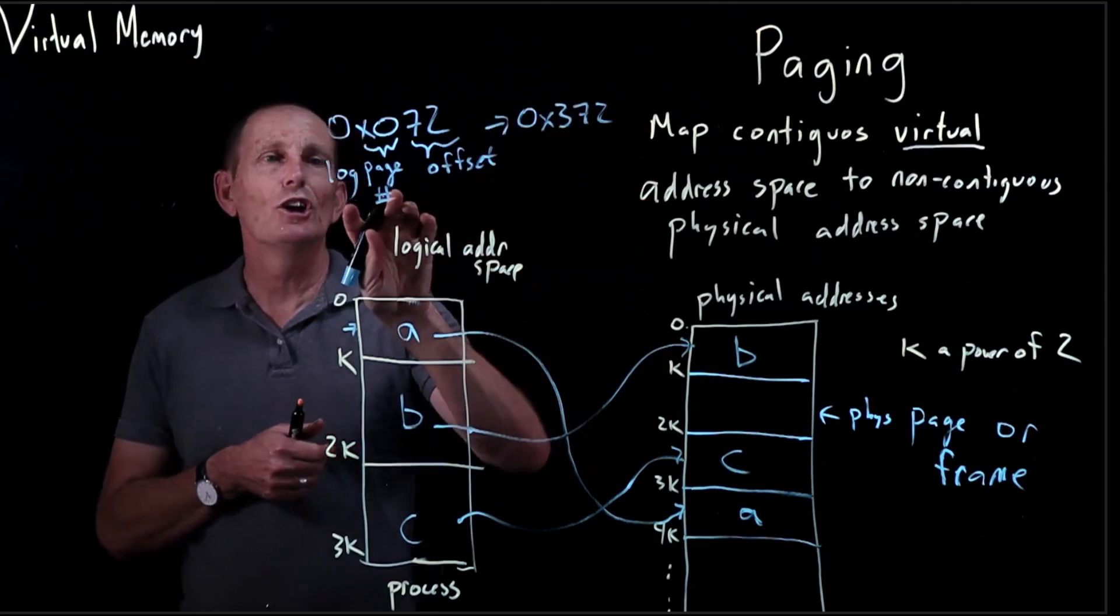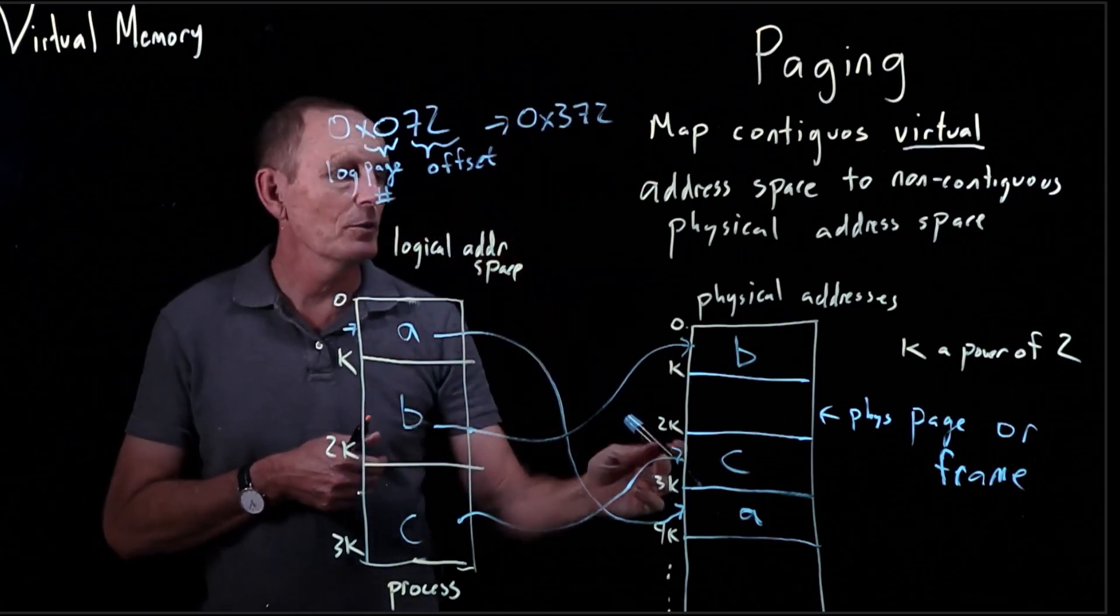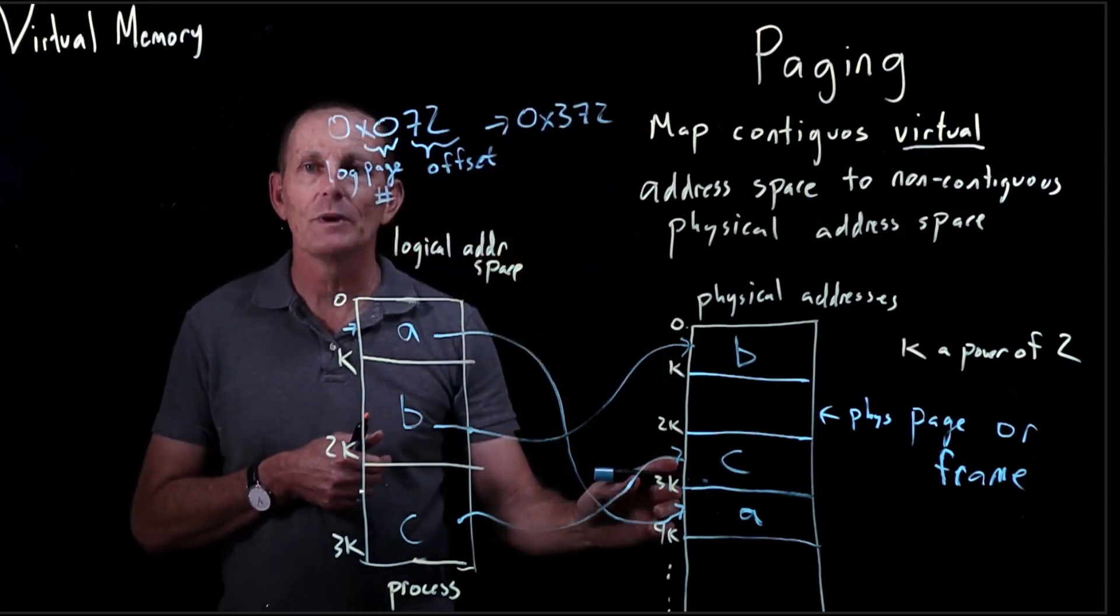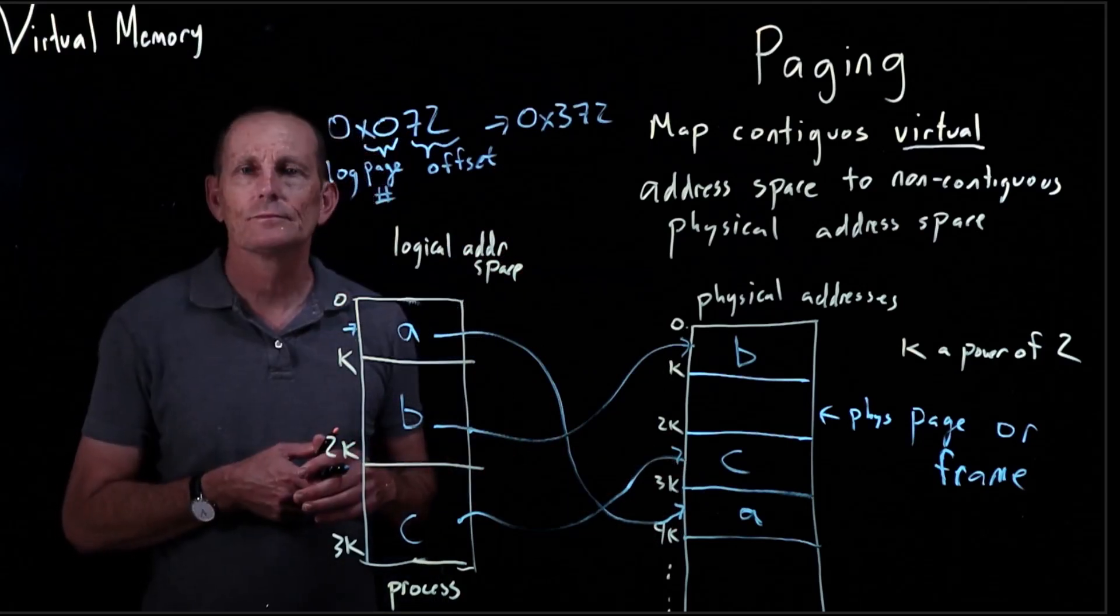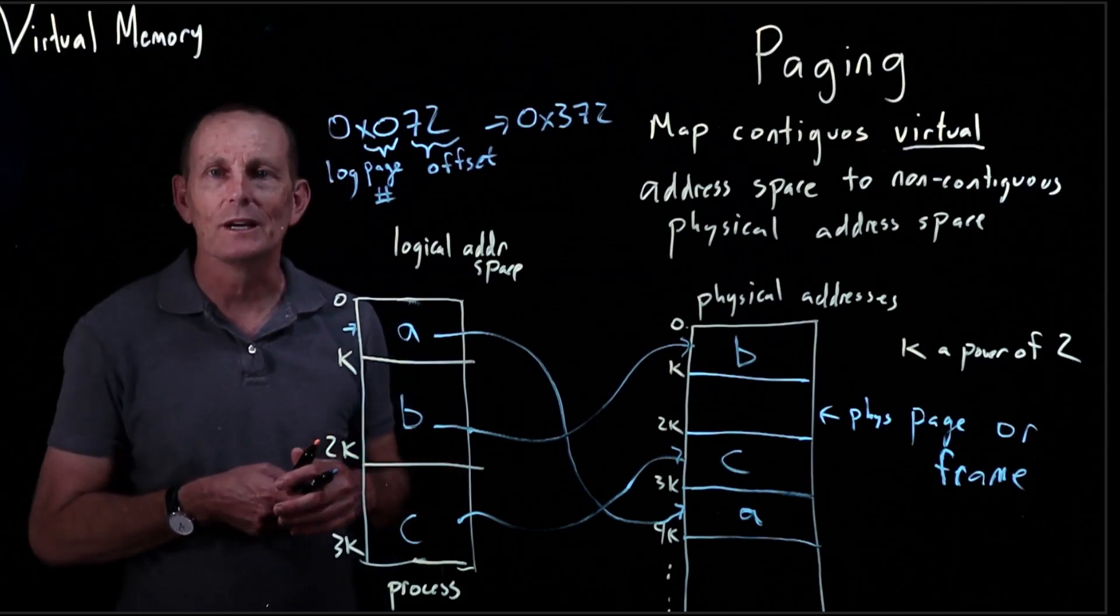So we'd have 0x300. We get a lot of flexibility by doing this.